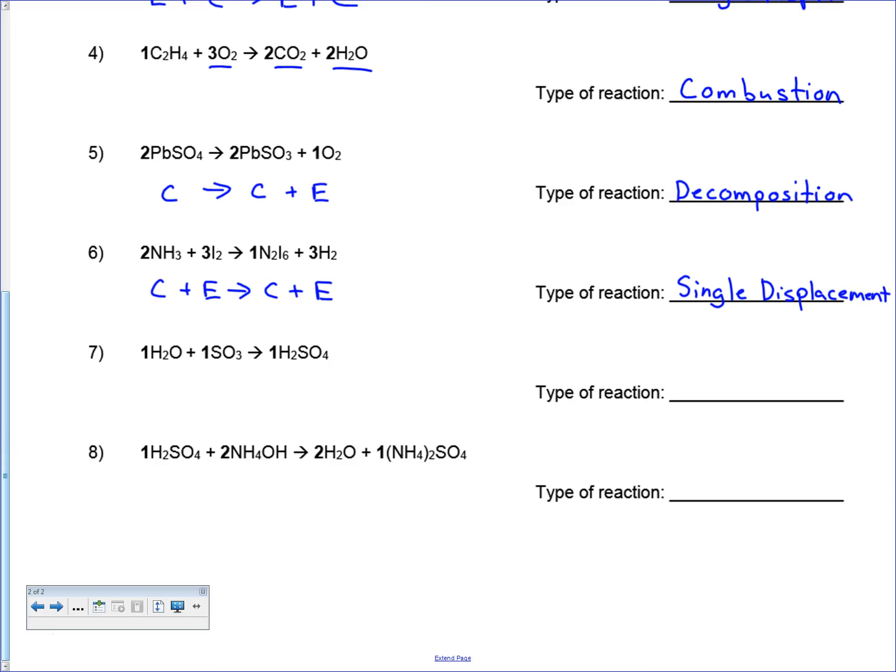Number seven: H2O plus SO3 yields H2SO4. On this one we've got compound plus compound yields compound. There's only one product here. So that means that it is synthesis.